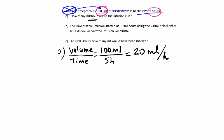Let's look at b: the infusion started at 1800 hours using the 24 hour clock, so what time do you expect the infusion will finish? Well, let's think about that. 1800, that's when it started. Let's look how long it will be running for - 5 hours. So what we're basically doing is 5 hours from 1800, so all we're actually doing is adding 5 hours on top of this. 18 plus 5 - in this case it's not too bad because it doesn't go over 24.